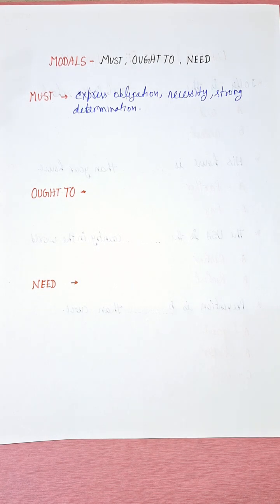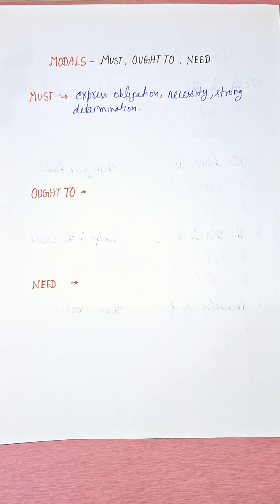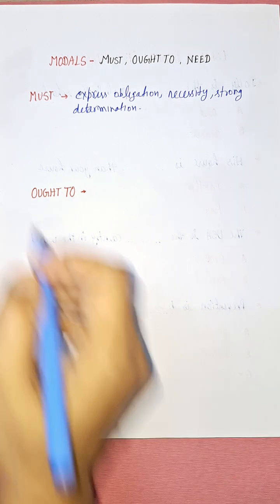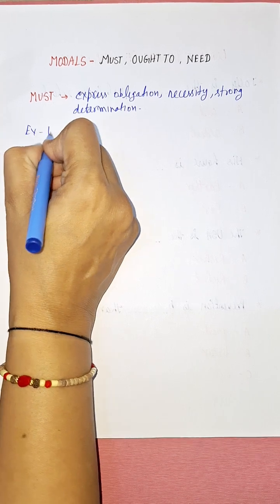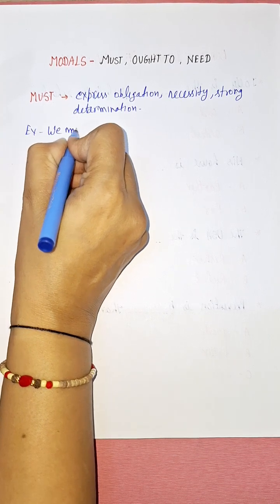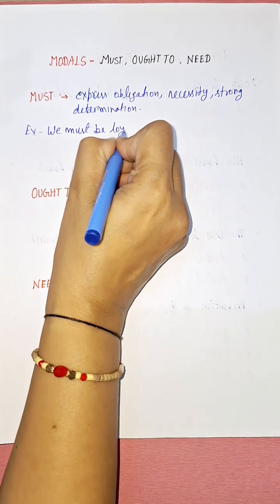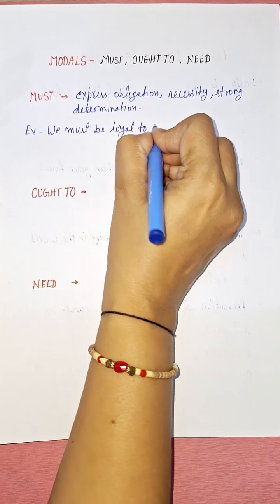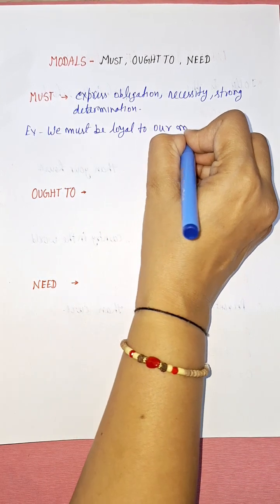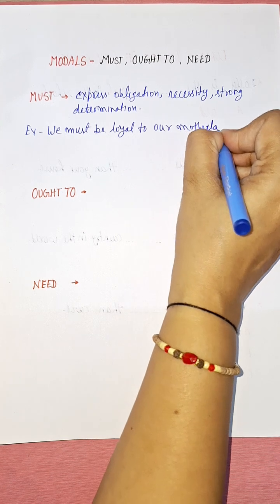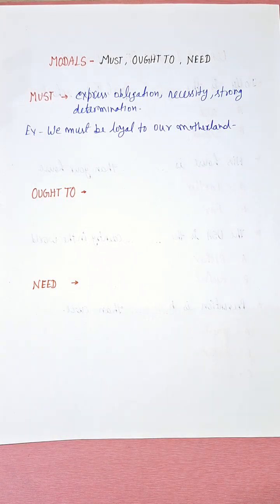For example, we can say: 'We must be loyal to our motherland.' Here, obligation is being shown — it is our duty that we must be loyal to our motherland.